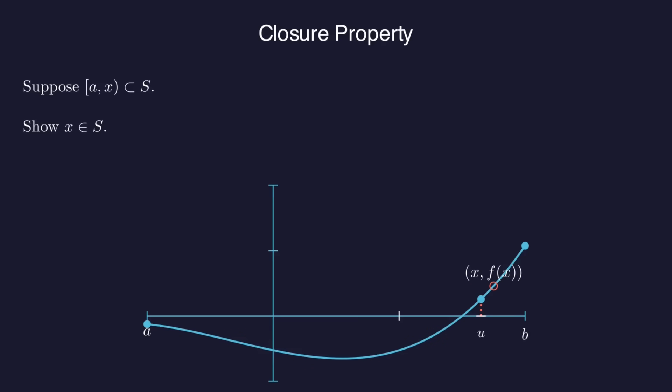Grab one of those points to the left of x, call it u. Since u is in s, and f of u is positive, there must be a root in the interval a to u, and therefore there's a root in the interval a to x. So we're done.